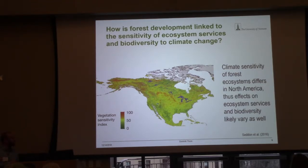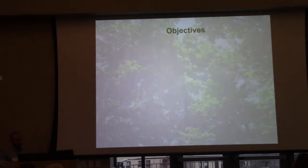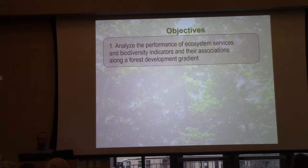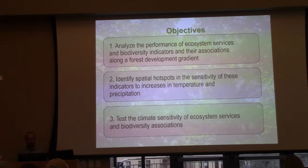As you see in this map, this is the sensitivity of vegetation, and there's quite some difference. These red spots are where plants are very sensitive; the darker spots are rather insensitive to climate change. So as there are differences in how vegetation is sensitive to climate, there's very likely also a difference in ecosystem services and biodiversity. The objectives of my talk are: first, to analyze the performance of ecosystem services and biodiversity indicators and their associations along a forest development gradient; second, to identify spatial hotspots in the sensitivity of these indicators to temperature and precipitation changes; and third, to test the climate sensitivity of ecosystem services and biodiversity associations.